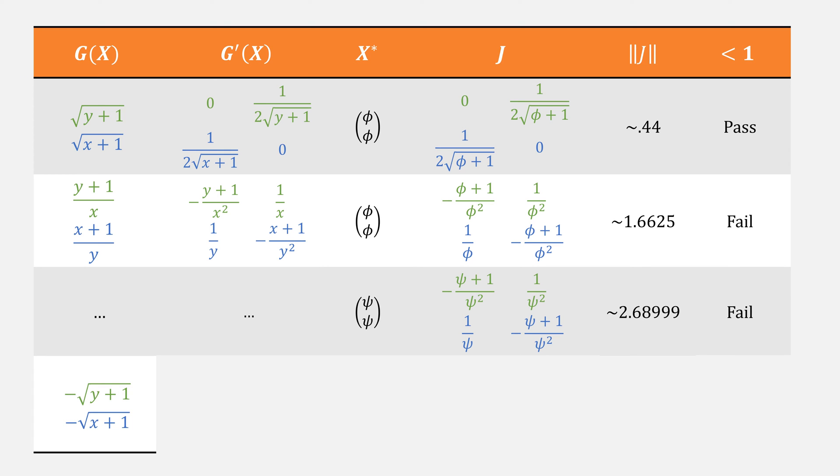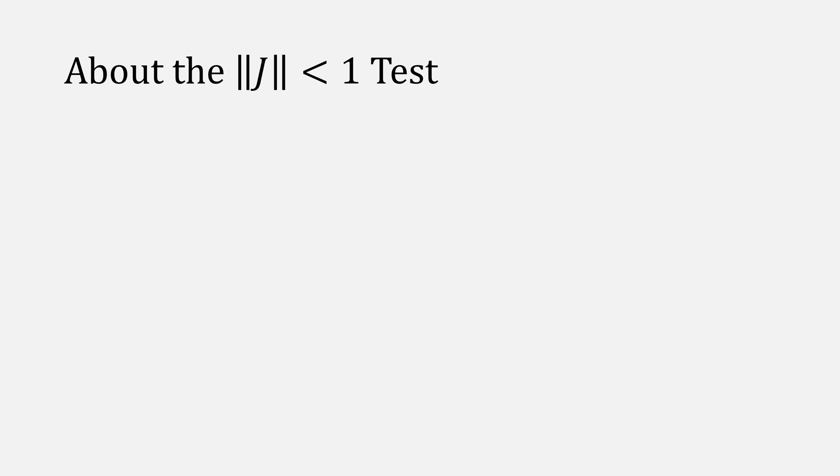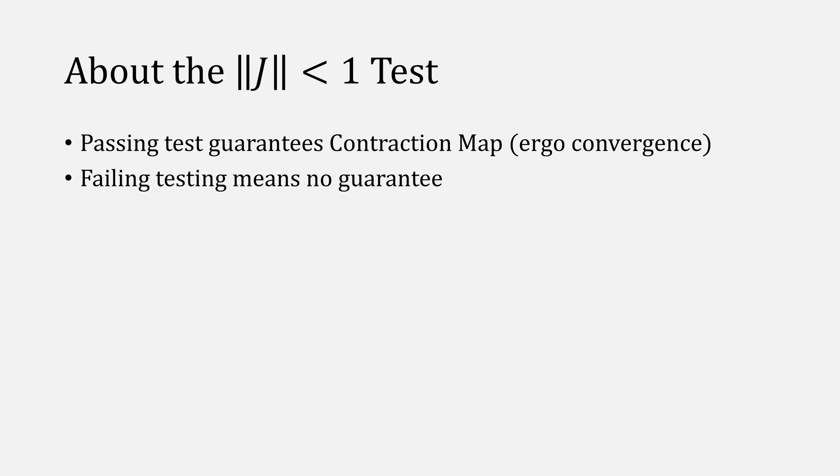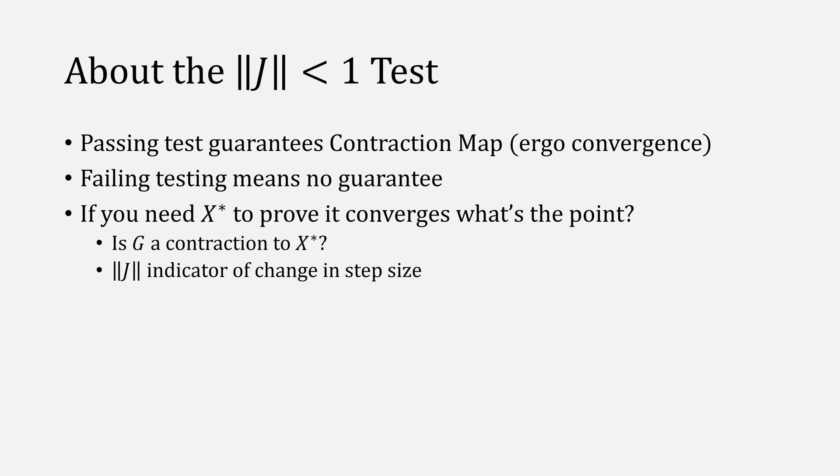Earlier, I referred to it as the convergence test, but really it is the contraction mapping test. Passing it guarantees it to be a contraction map. Failing it only means that there is no guarantee. Also if you needed x star to find j, then what was the point of trying to guarantee its convergence, because you already know the solution. Think of it as, is g a mapping to x star? Also having j is a good indicator of the change in step size. You can avoid a lot of this by using the generalized Aitken-Steffensen's method, which is the subject of another video.